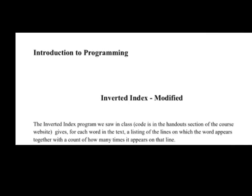In class, we worked on a problem of creating an inverted index for a file. By an inverted index, we meant a listing that gives for every word in that text a listing of the lines — it'll have the word and then the lines on which that word appears, together with a count of how many times it appears on that line.